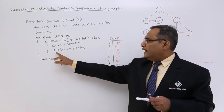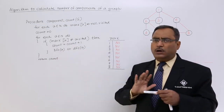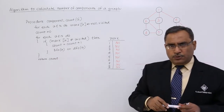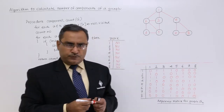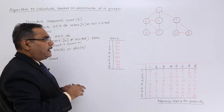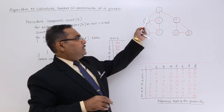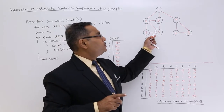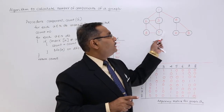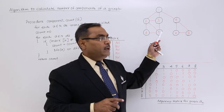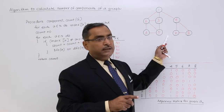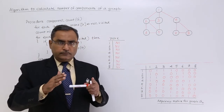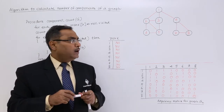Count becomes count plus 1, so the count value becomes 1 (0 plus 1). Then BFS or DFS, whichever algorithm you require, is called. In our previous videos we showed that for this particular graph, which has only one component, all the nodes are connected with each other, so there are no disconnected subgraphs. The number of components in this graph is 1.